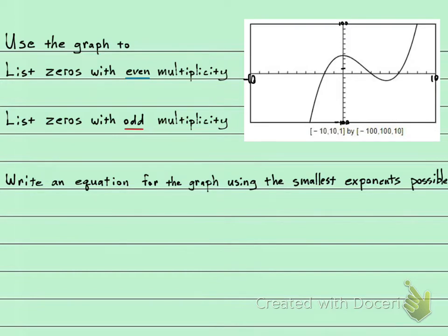All right, so the first two questions, they say list the zeros with even multiplicity and then list the zeros with odd multiplicity. So I'm going to identify all my zeros. I'm going to put them in purple. And remember your zeros are your x-intercepts. So it's wherever this graph touches the x-axis. And we could see that it touches right here. And it touches right here. And it touches right here. And it touches right here.